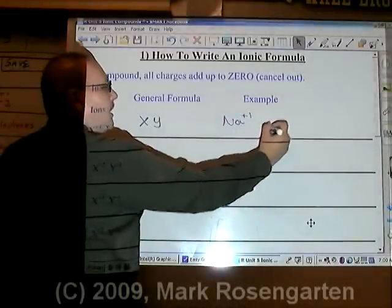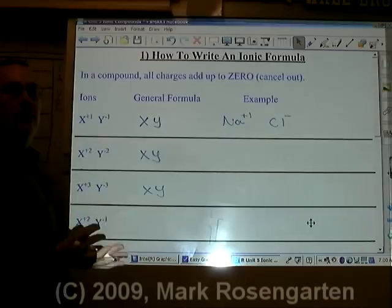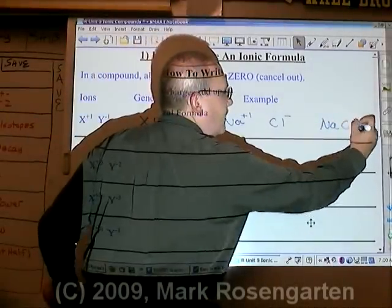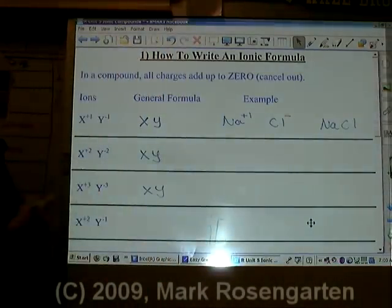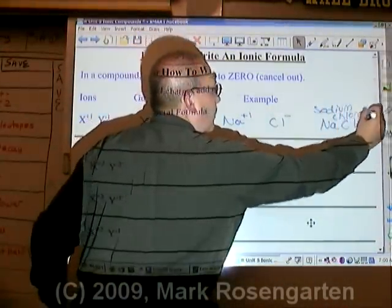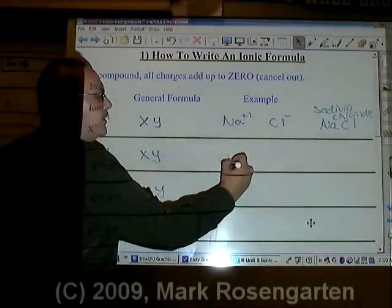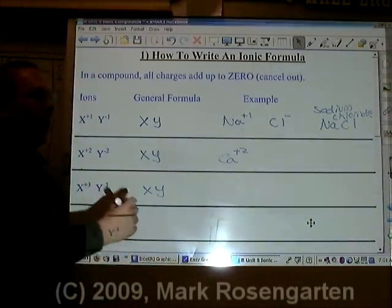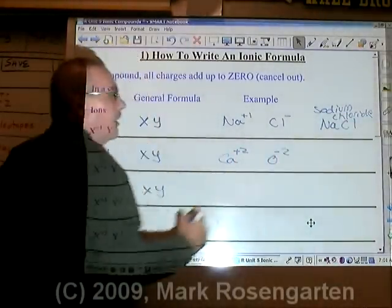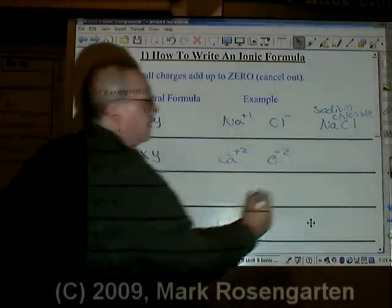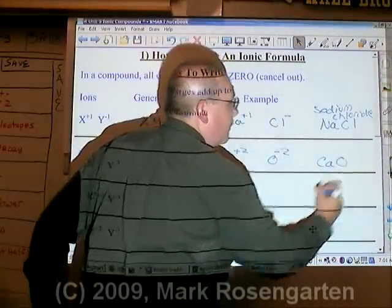For example, Na⁺¹ and Cl⁻¹, their charges cancel out, giving a formula of NaCl, known as sodium chloride. Calcium is plus two. Oxide is minus two. Therefore, they'll cancel each other out to form the formula calcium oxide.